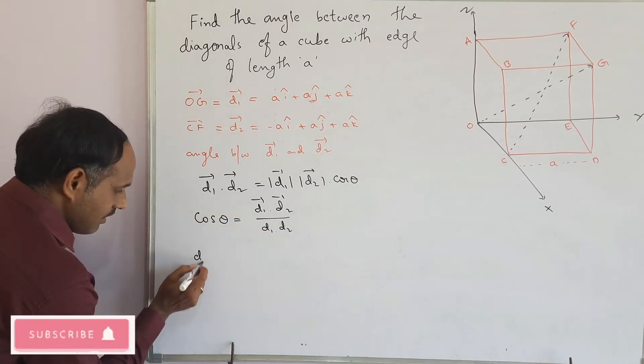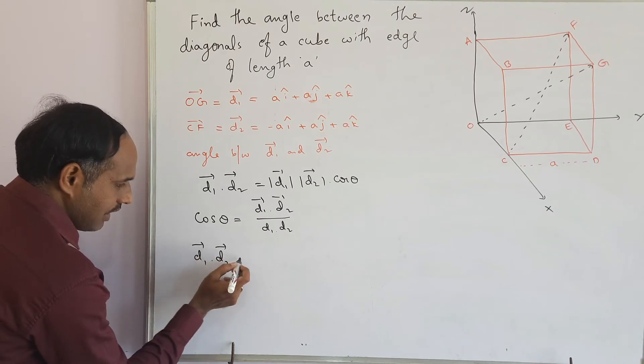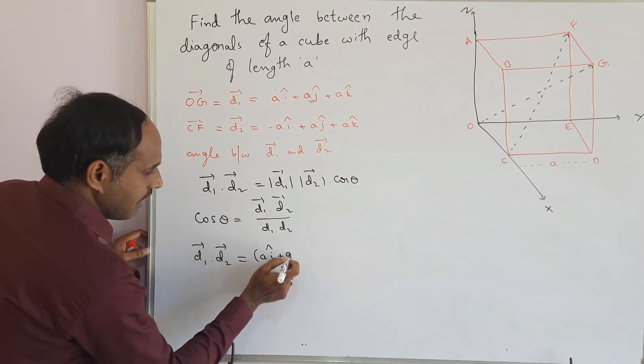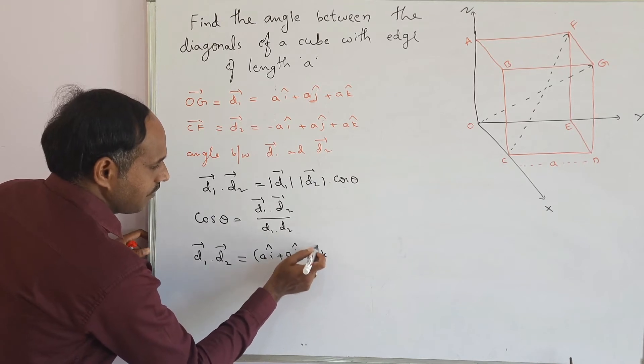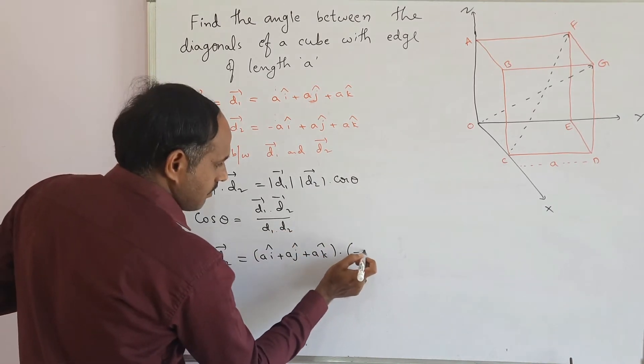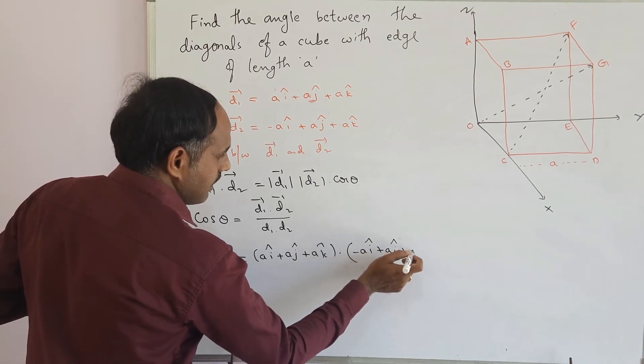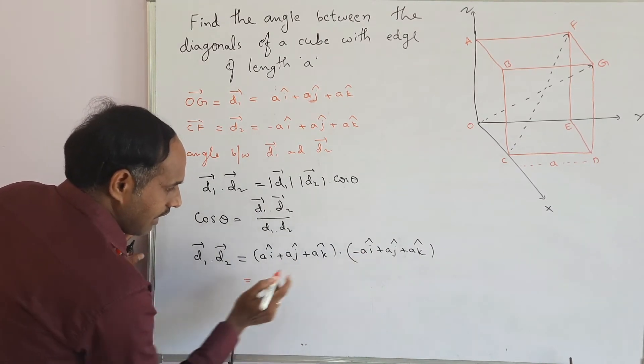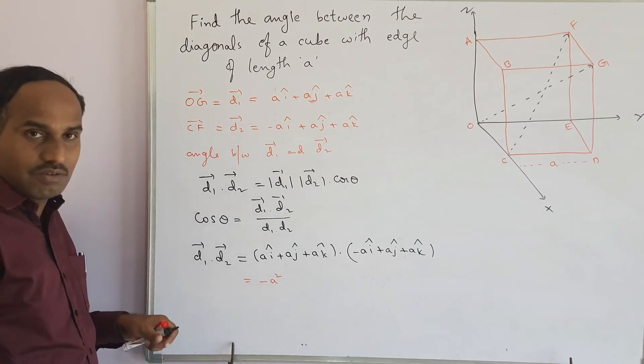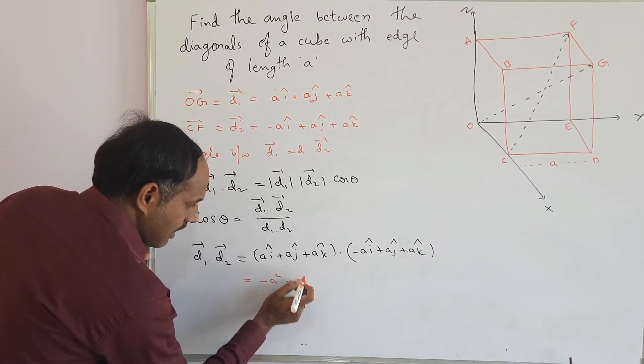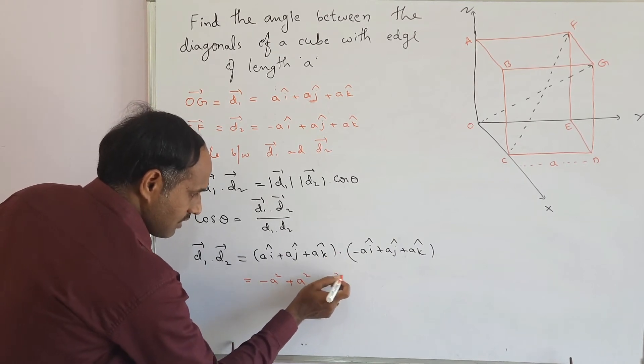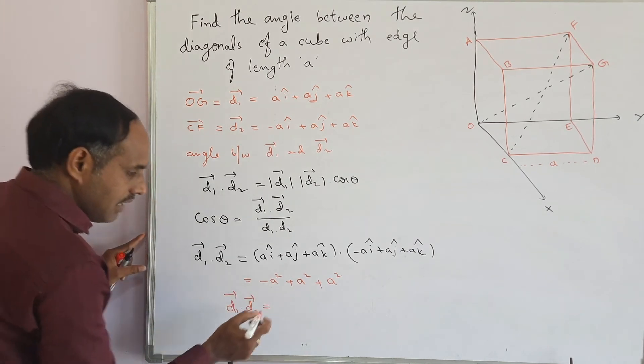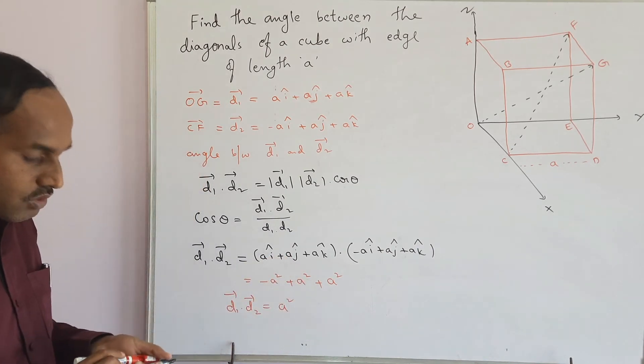At first, I am finding the dot product of two diagonals D1 bar dot D2 bar. This equals D1 bar: A i cap plus A j cap plus A k cap, dot D2 bar: minus A i cap plus A j cap plus A k cap. Here we will get minus A square, i dot i is one, plus A square, j dot j is one, plus A square, k dot k is one. So you will get D1 bar dot D2 bar equals A square.